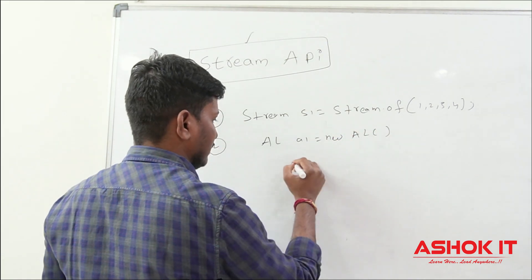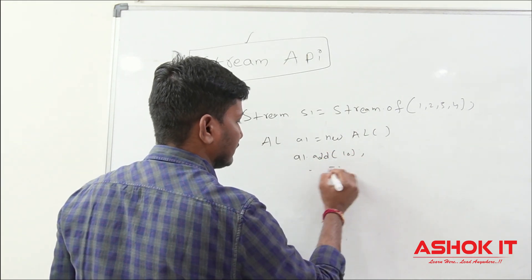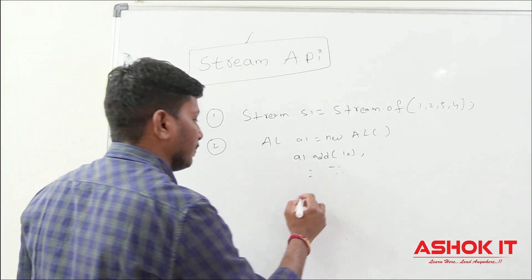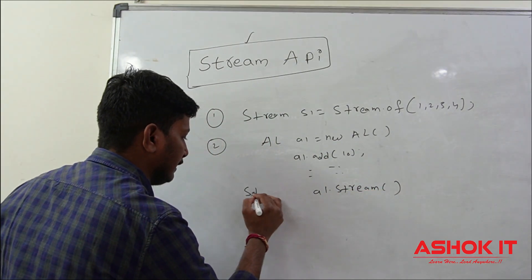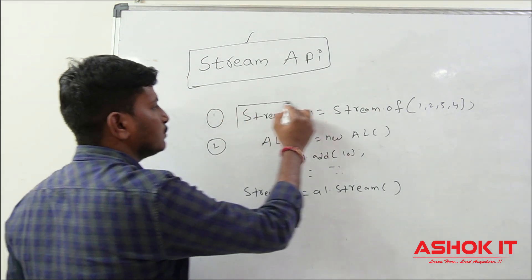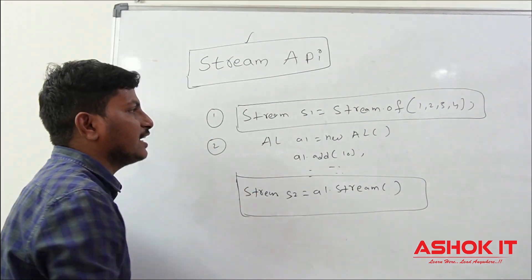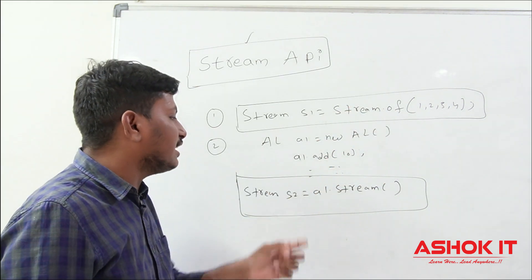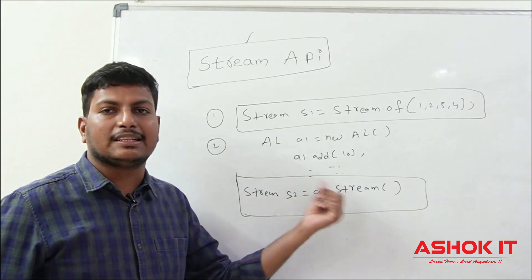For the second approach, take a collection: `ArrayList al = new ArrayList()`, store some data in it, then call the `stream()` method on the collection to get a stream object. If you want to create a new stream by giving elements as input, use the `of()` method. If you already have data in a collection, use the `stream()` method on that collection object.